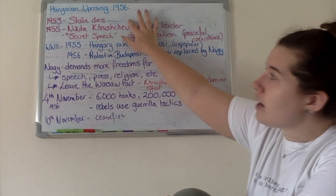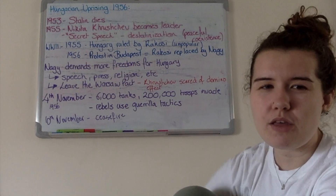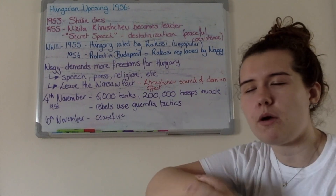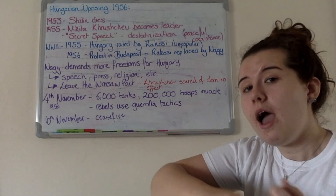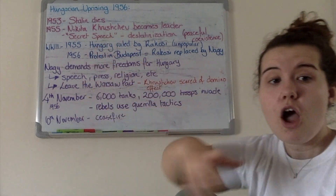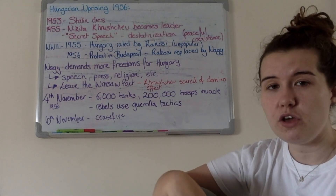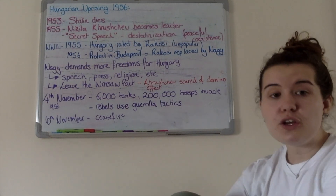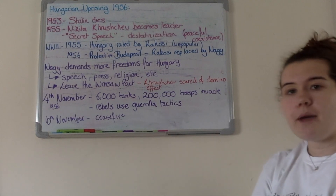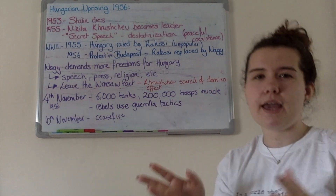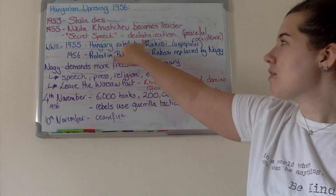Our story starts in 1953. Stalin dies of a brain aneurysm on the 5th of March and there are two years of complete infighting in the Communist Party — several different leaders all vying to be top dog. Eventually, in 1955, Nikita Khrushchev emerges as the new leader of the Communist Party in the Soviet Union. The people of the Soviet Union and the satellite states are really happy about this. He is very different to Stalin, as revealed in his secret speech to the Communist Party, which talks about de-Stalinisation.